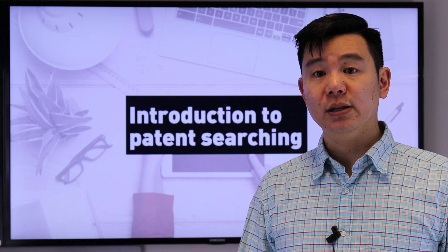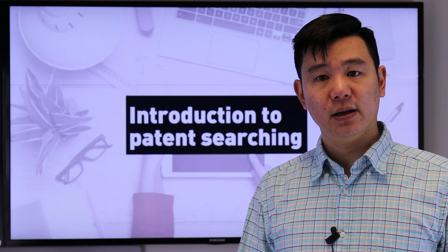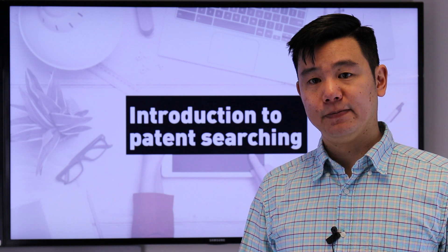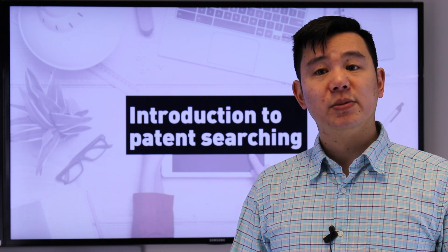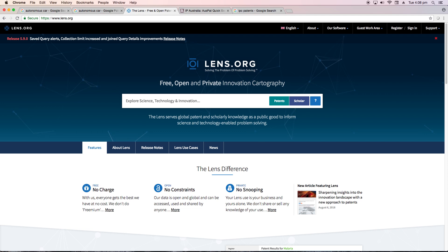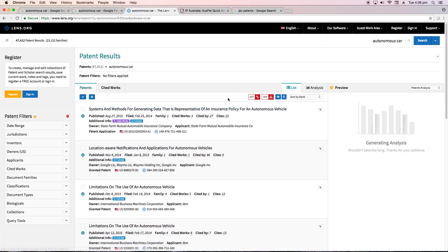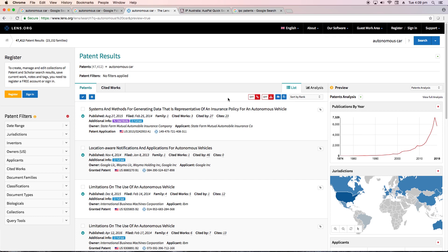However, if you're looking to get a global view of the market you're entering, it could still be worth a search. Another website I want to highlight is Lens.org. As with Google Patents, this is a free tool which allows you to search databases across the world. Where Lens.org really differs is it does include Australian results. The interface is a bit trickier than Google Patents. However, because it covers all the databases across the world, it is a very powerful tool and well worth a look.